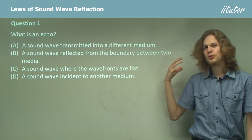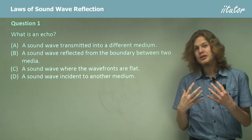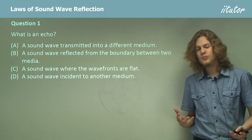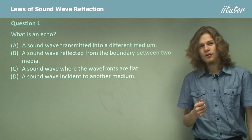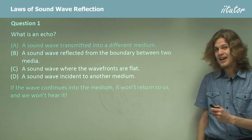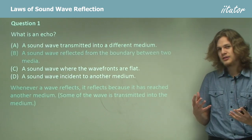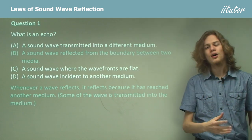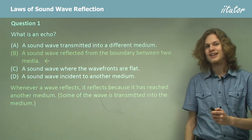When we think about an echo, we think about a copy of a sound we've just heard. A sound wave transmitted into a different medium would never actually reach us. Options C and D could just be ordinary sound waves — the wave we hear initially, not a copy. So the only good answer is B: a sound wave reflected from the boundary between two media. Whenever a wave reflects, part of it is transmitted and part is reflected, and this reflection is what we hear as an echo.